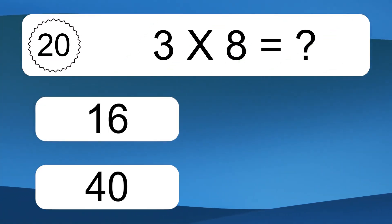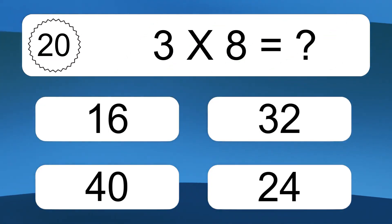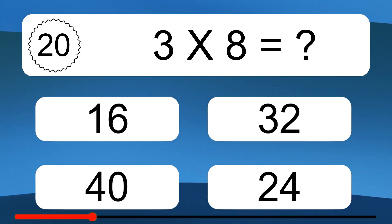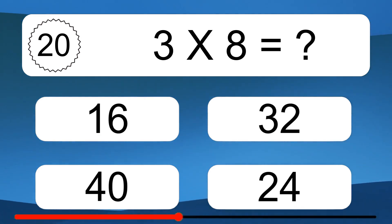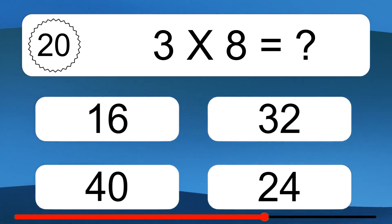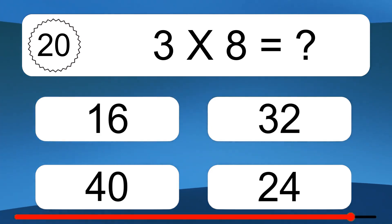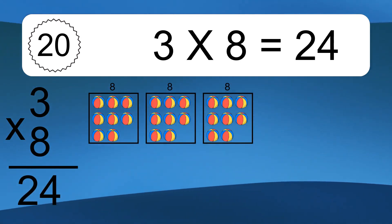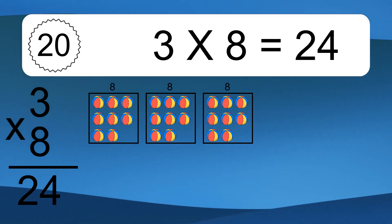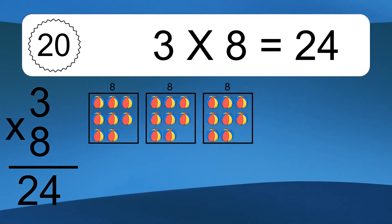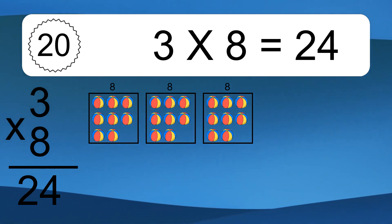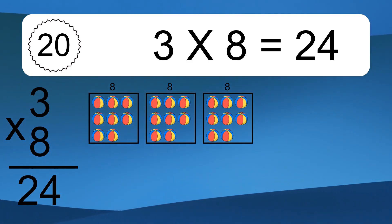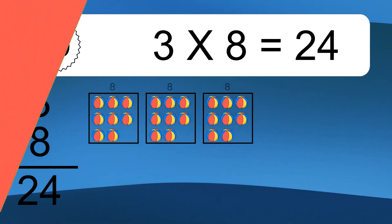Three times eight equals what? Three times eight equals 24. We have three boxes, and each box has eight colorful balls inside. If you count all the balls in all the boxes together, you will have three times eight balls. This equals 24 balls.